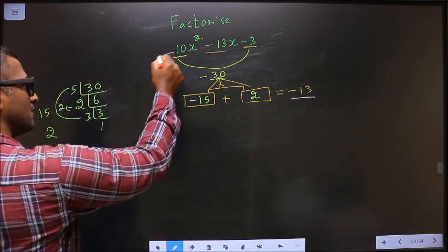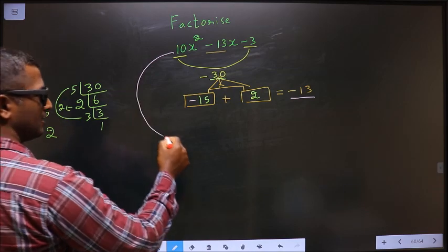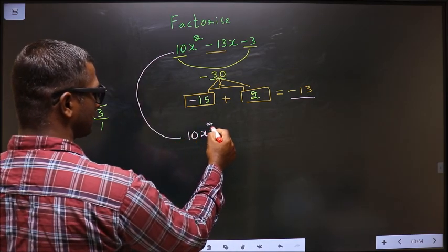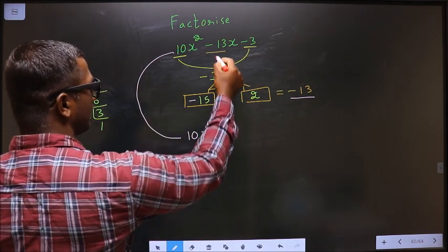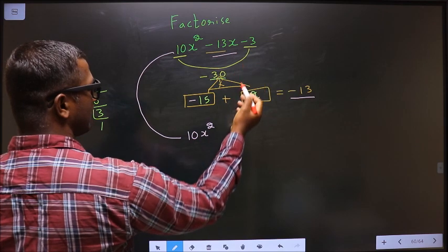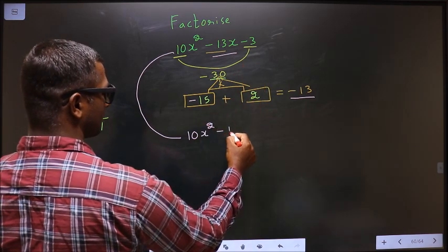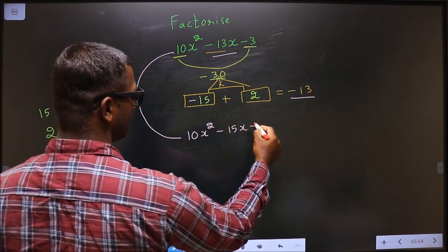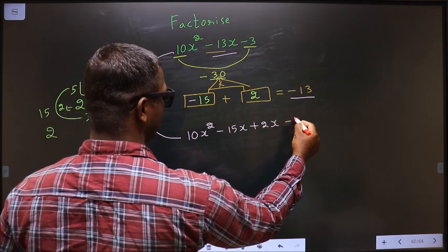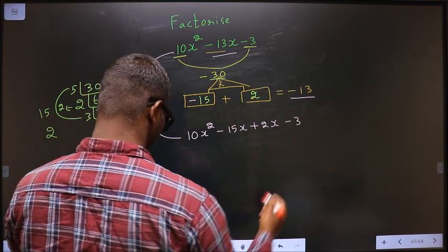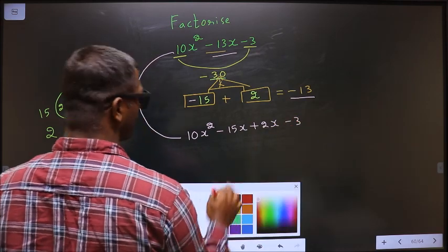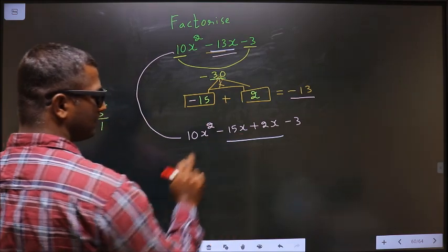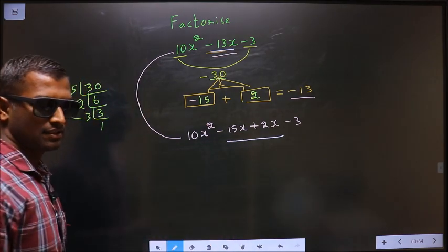Now this will change to 10x squared. In place of minus 13x, I now write minus 15x plus 2x, minus 3. So in place of minus 13x, I have written minus 15x plus 2x.